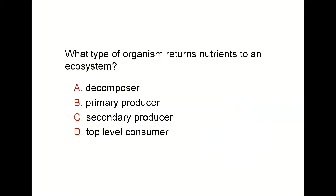What type of organism returns nutrients to an ecosystem? They turn nutrients back after decaying dead bodies — it's decomposers. Decomposers like fungi and some bacteria return nutrients back to the soil so plants can benefit. Without decomposers, there would be no life, because decomposers return dead bodies into organic matter and minerals that plants can use. Decomposers are very important — they recycle.